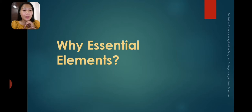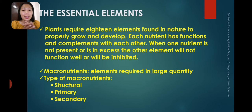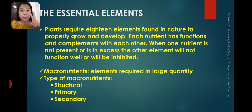Plants actually require 18 essential elements, and these elements are found in nature. Each nutrient has specific functions and they complement each other — when one nutrient is absent or in excess, the other elements will not function well or will be inhibited. There are two general types of essential nutrients: macronutrients and micronutrients.